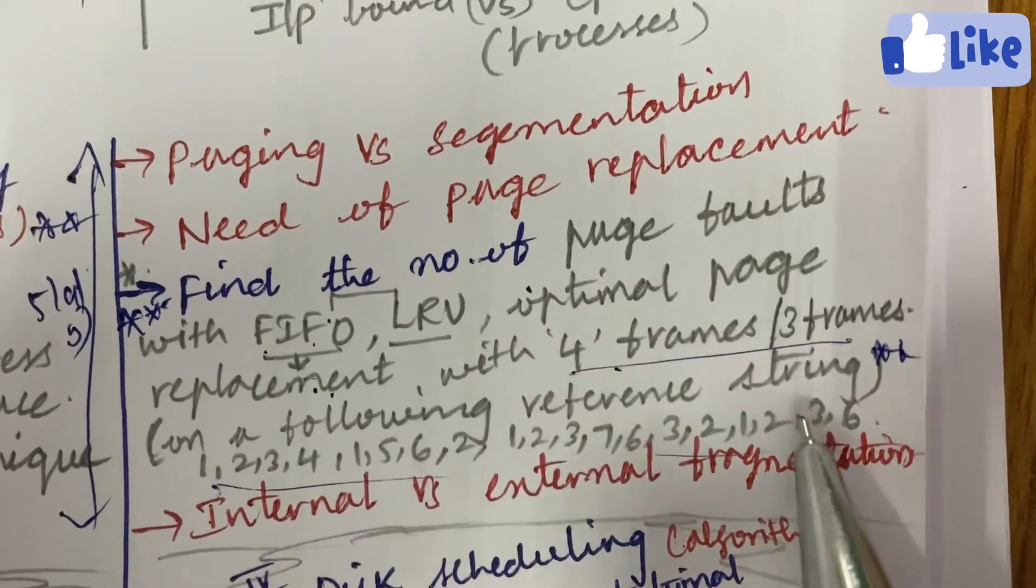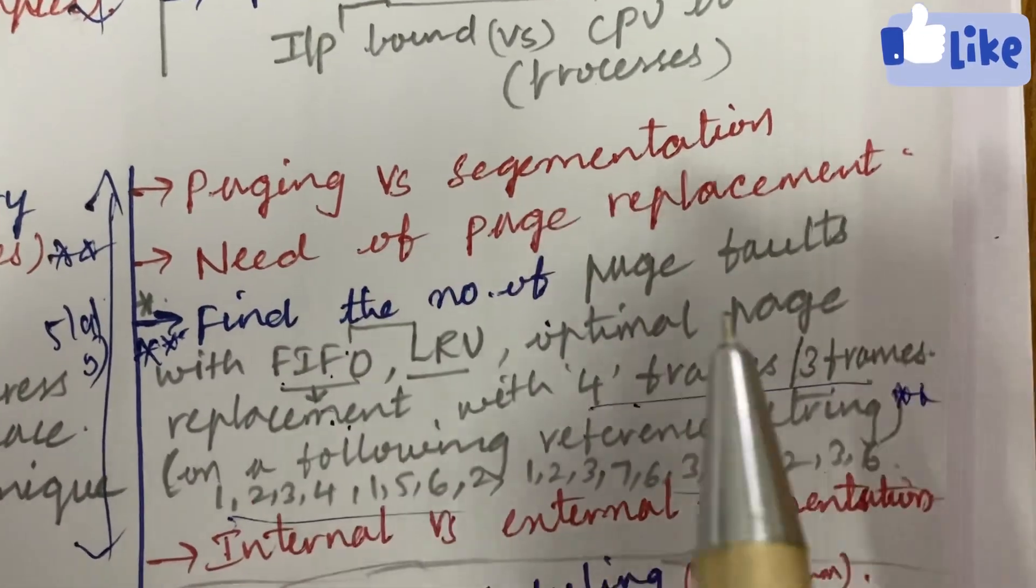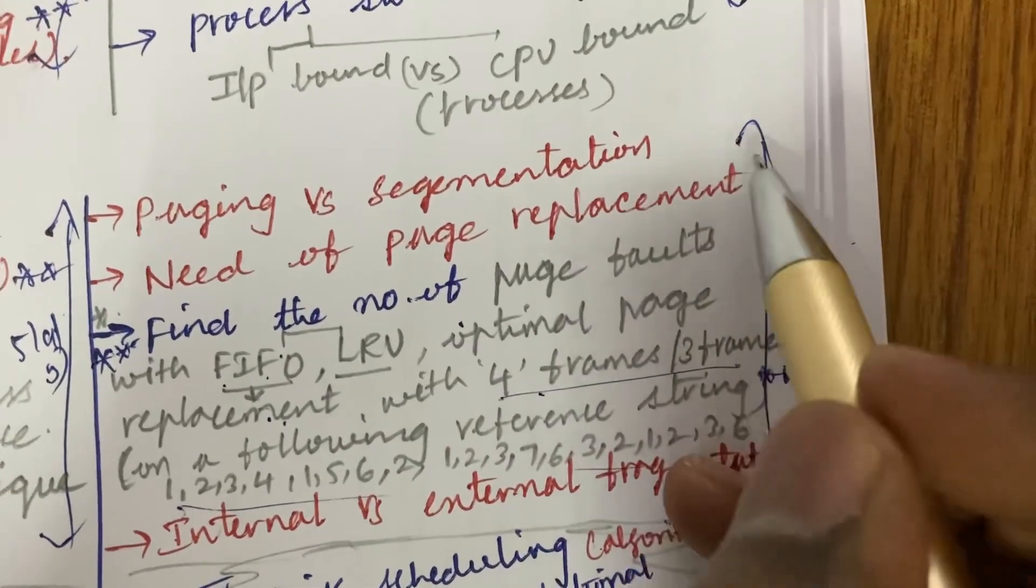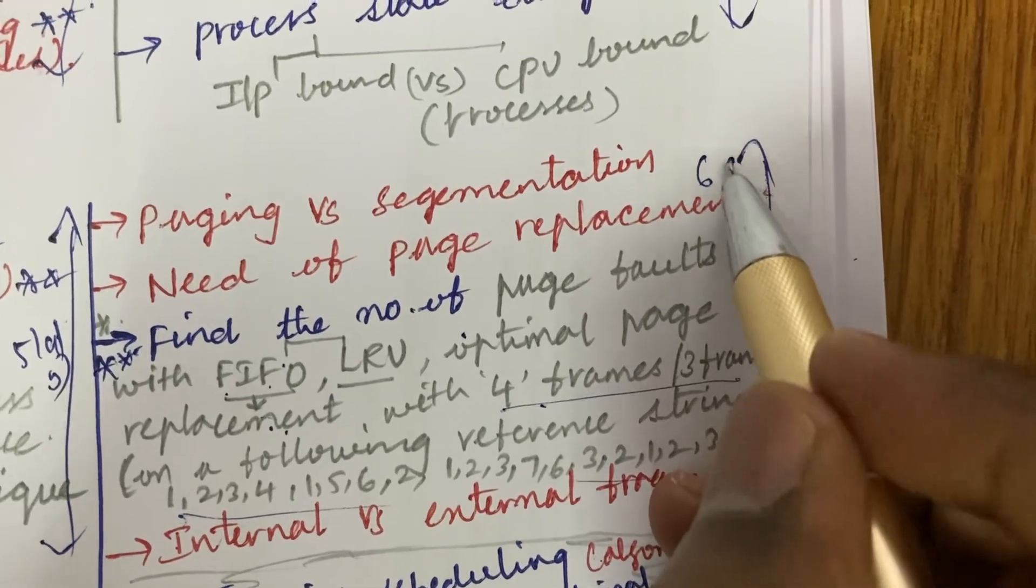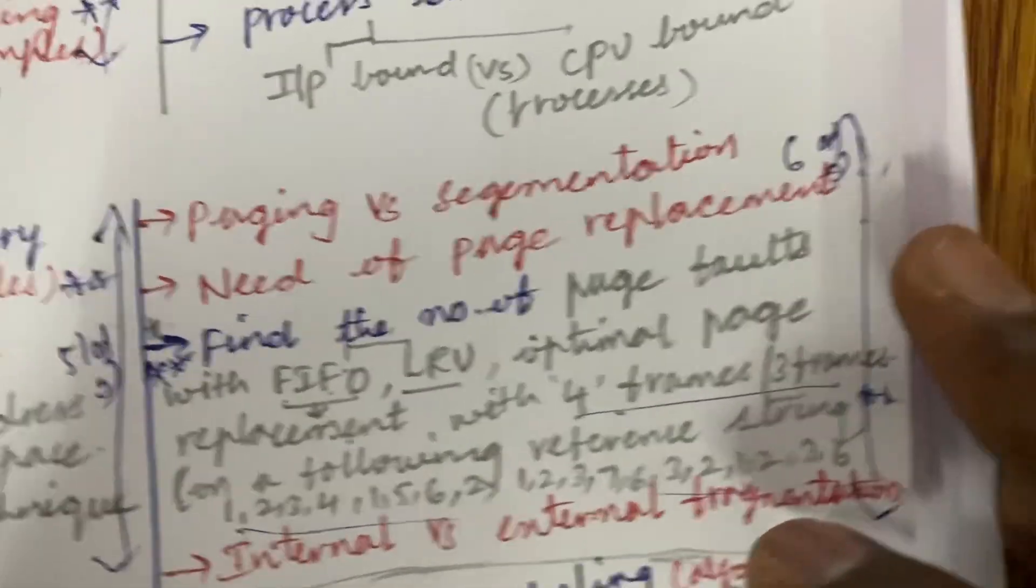When a following reference string is given in this fashion like 1, 2, 3, 4, so on, you are supposed to work out this. This is one of the gunshot questions related to these concepts, as well as the internal versus external fragmentation. From this part you may be getting sixth question or sometimes 6B.